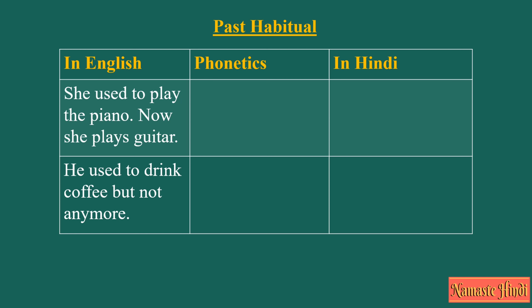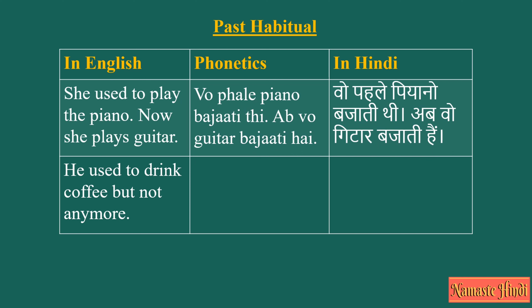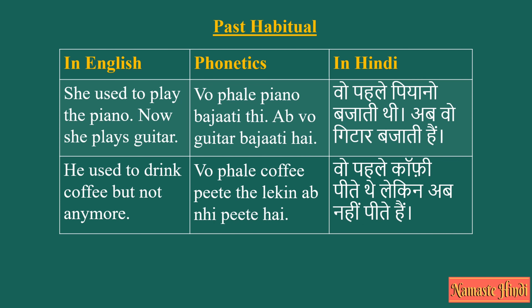She used to play the piano, now she plays guitar — Woh pehle piano bajati thi. Ab woh guitar bajati hai. He used to drink coffee, but not anymore — Woh pehle coffee peete the. Lekin ab nahi peete.